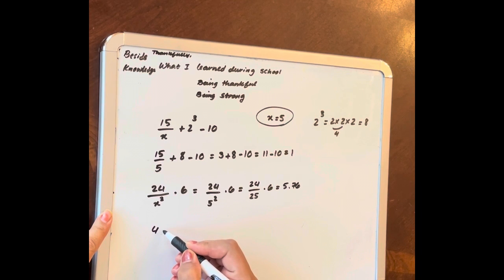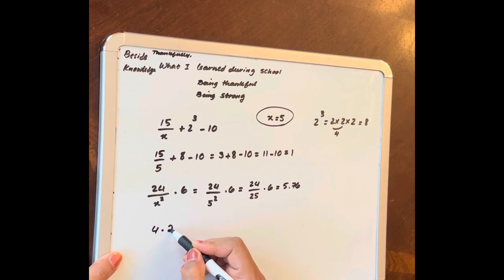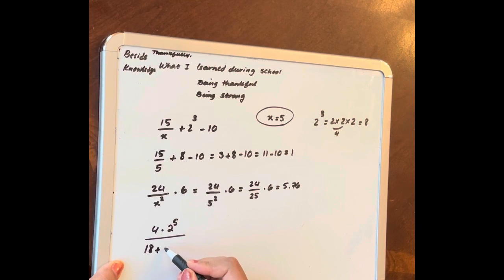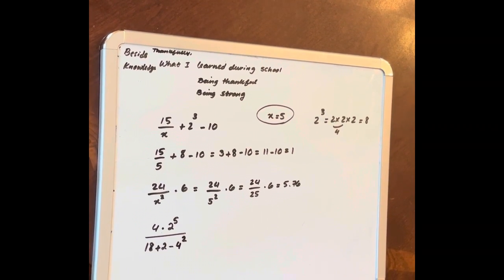4 times 2 to 5 over 18 plus 2 minus 4 to 2. Evaluate and simplify this expression.